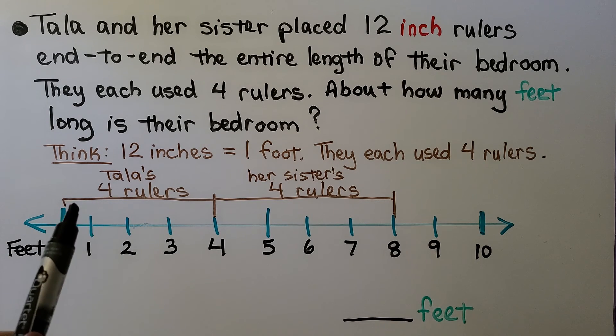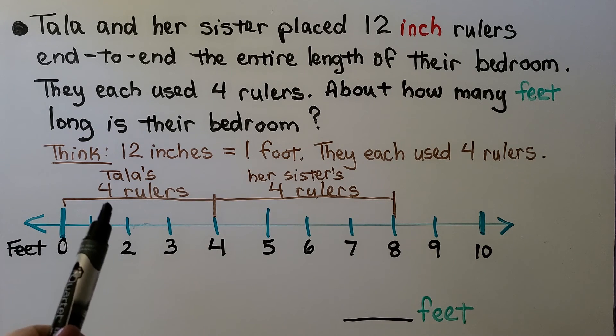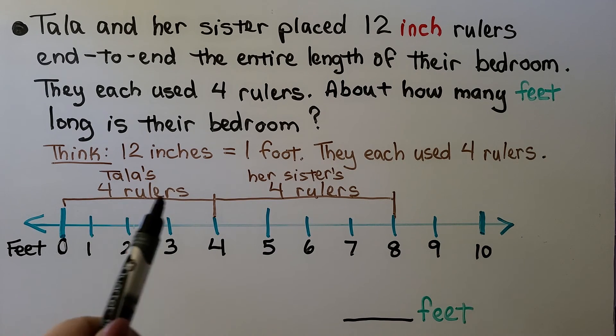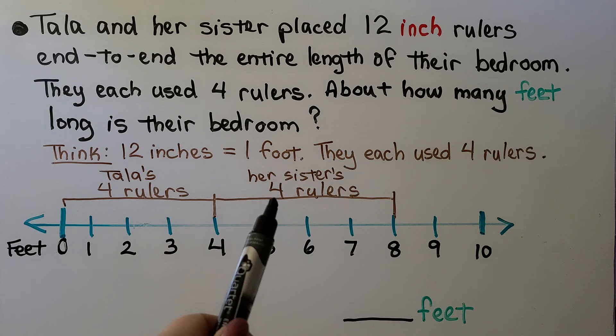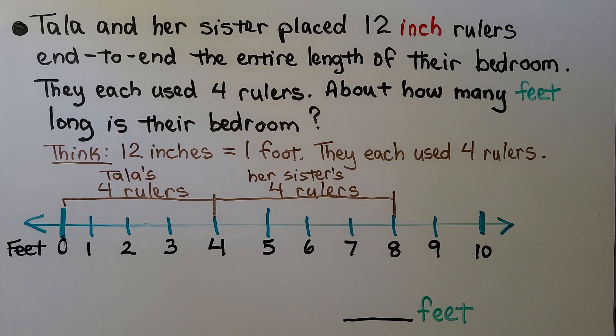Then her sister's 4 rulers would be another 4. That means their bedroom is 8 feet long.